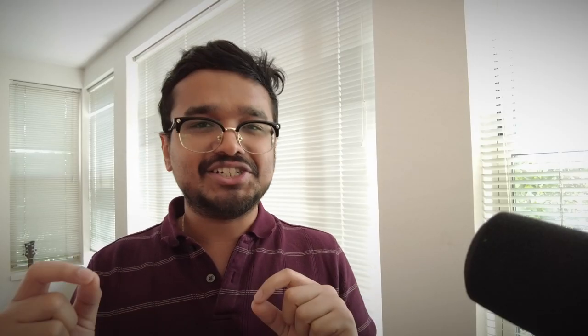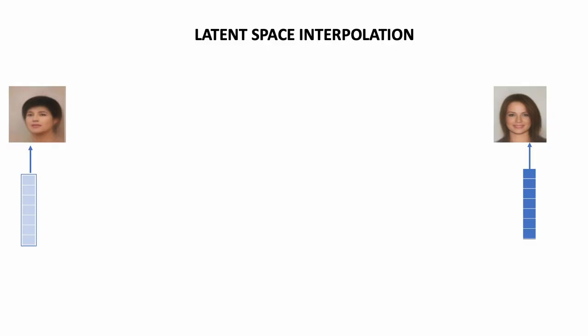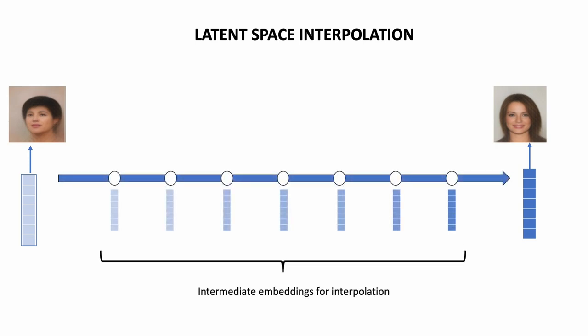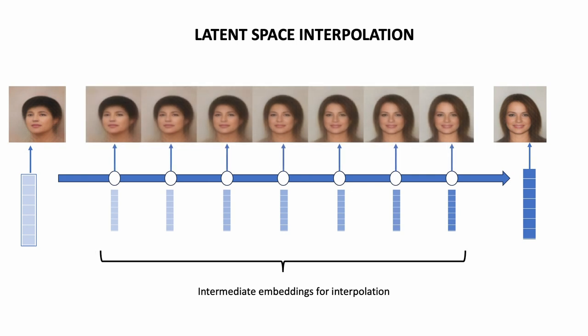Here I have trained a variation of the variational autoencoder called the DFCVAE, which replaces the straight-up reconstruction loss with an auxiliary loss between the feature maps of a pre-trained computer vision model like VGG. I'll add a link to the paper in the description below. With that, you can generate new faces by feeding vectors sampled from a Gaussian distribution. You can also do image space interpolation — take two latent vectors that produce two different faces, calculate the intermediate vectors in between, and produce intermediate images that slowly interpolate between the two.